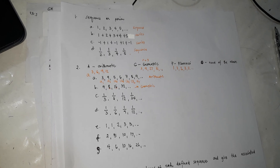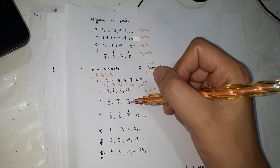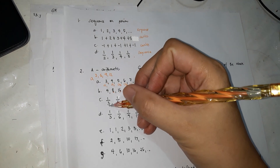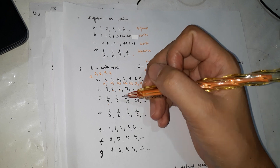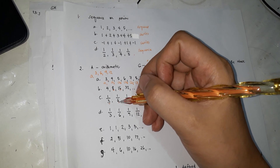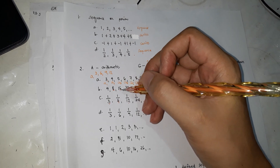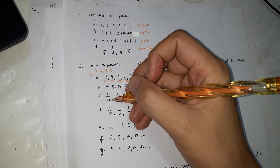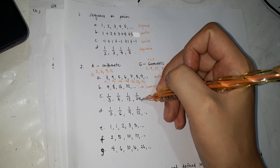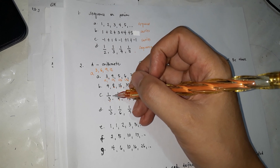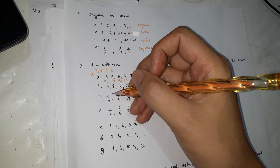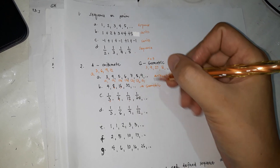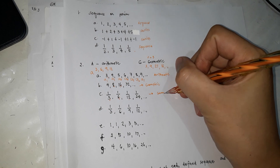Letter C: 1/3, 1/6, 1/12, 1/24. Notice the denominators 3, 6, 12, 24 — you multiply by 2 each time. So 1/3 times 1/2 is 1/6, times 1/2 is 1/12, times 1/2 is 1/24. Since there is a common ratio, this is an example of geometric.